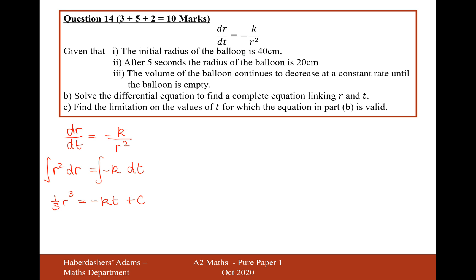Okay, so I know initially that the radius of the balloon is 40 centimeters. So that's when t equals 0, r equals 40. So 1 third of 40 cubed equals 0 plus c. So therefore, c equals, let's do it on the calculator, 40 cubed. 40 cubed divided by 3, that's 64,000 over 3.